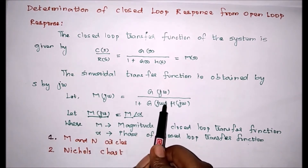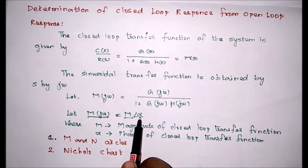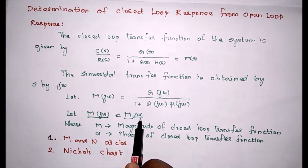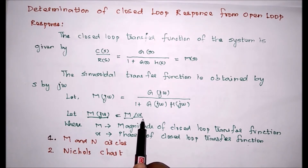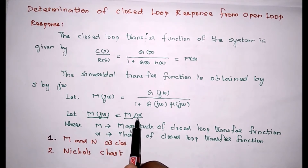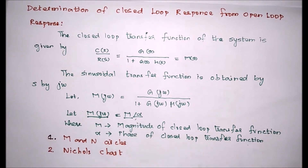From this equation, the magnitude and phase angle both depend upon the frequency omega. The sketch of magnitude and phase of a closed loop system with respect to omega is the closed loop frequency response plot. For various values of omega, we find the magnitude and alpha, and plot them in the semi-log sheet to determine the closed loop frequency response from the open loop frequency response.